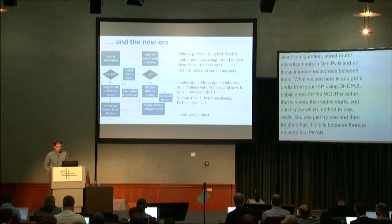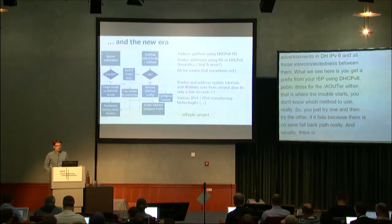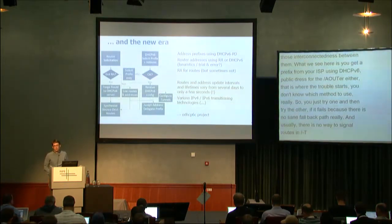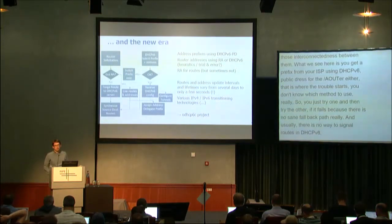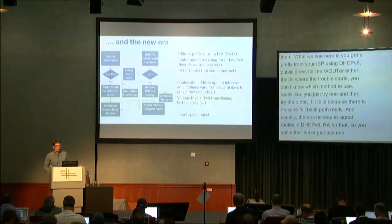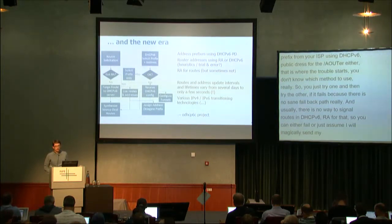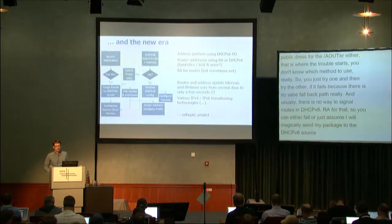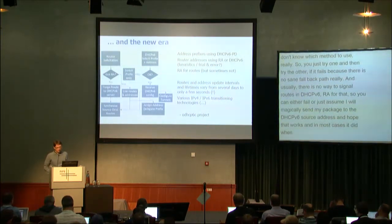Usually there's no way to signal routes in DHCPv6, so you have to use RAs for that. But some ISPs don't send you an RA, so you can either fail or just assume you'll send your packet to the DHCPv6 server source address and hope that it works — and in most cases it actually did when there was no RA, so that's what we had to do.